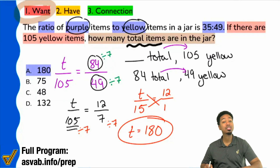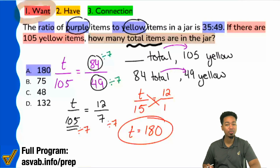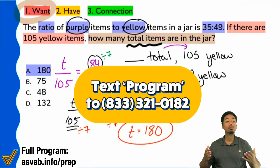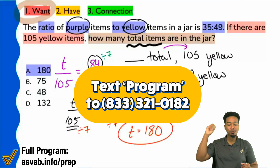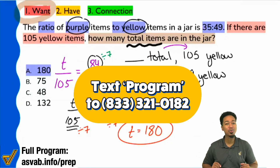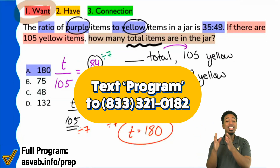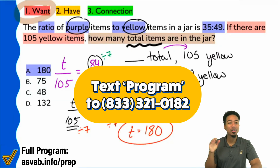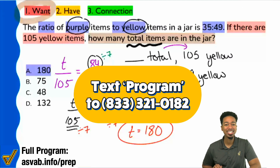And the answer choice there is A. If you liked how we performed this math and went through it with you, you can get more information on our full program to raise your score and get the job you want. Go ahead and text PROGRAM to 833-321-0182, and I'll show you exactly how we've taken over 1,500 students from where they were to the scores they wanted, without all the confusion and without all the test anxiety. I'll see you there, my partner people. Let's raise our scores and let's ace the ASVAB. Cheers.